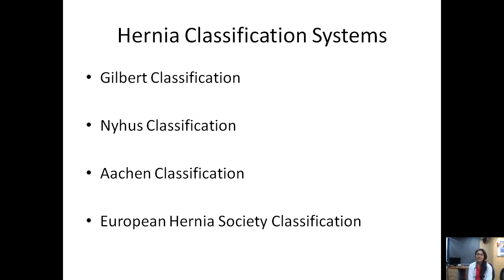Hernia classification systems: any classification system ensures uniformity in understanding pathophysiology, management, and review of literature. In hernia, no particular classification has served all purposes due to the wide variety of operative techniques. The classification systems include the Gilbert classification, the Nyhus classification, the HN classification, and the European Hernia Society classification, which is a modification of the HN classification.